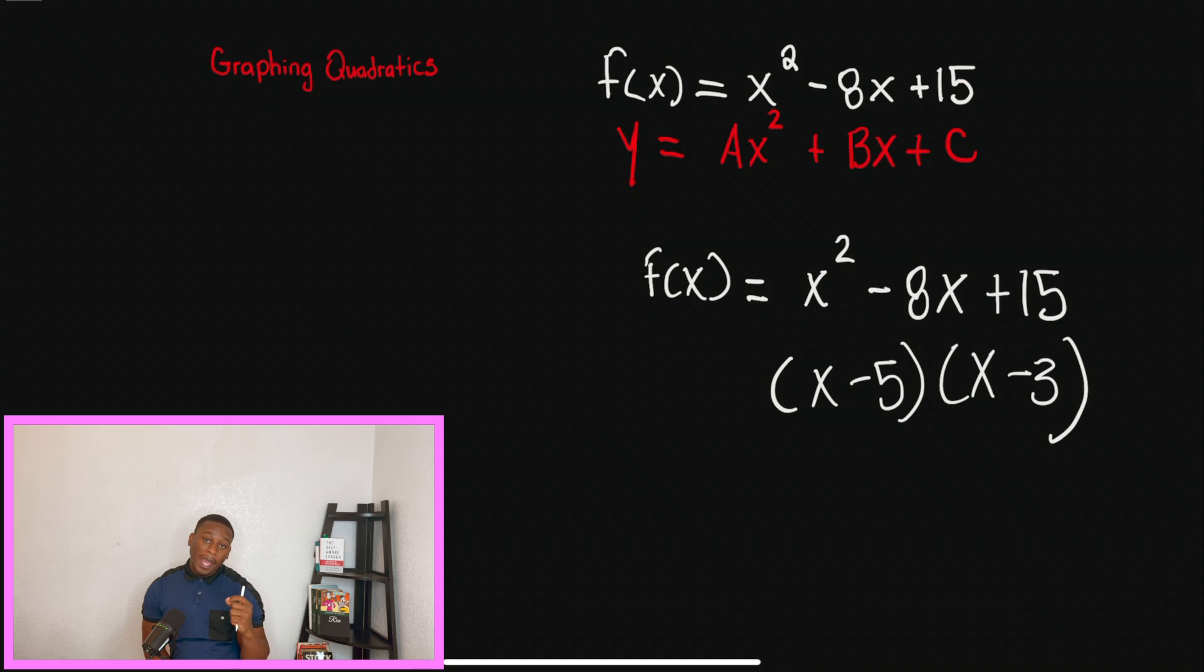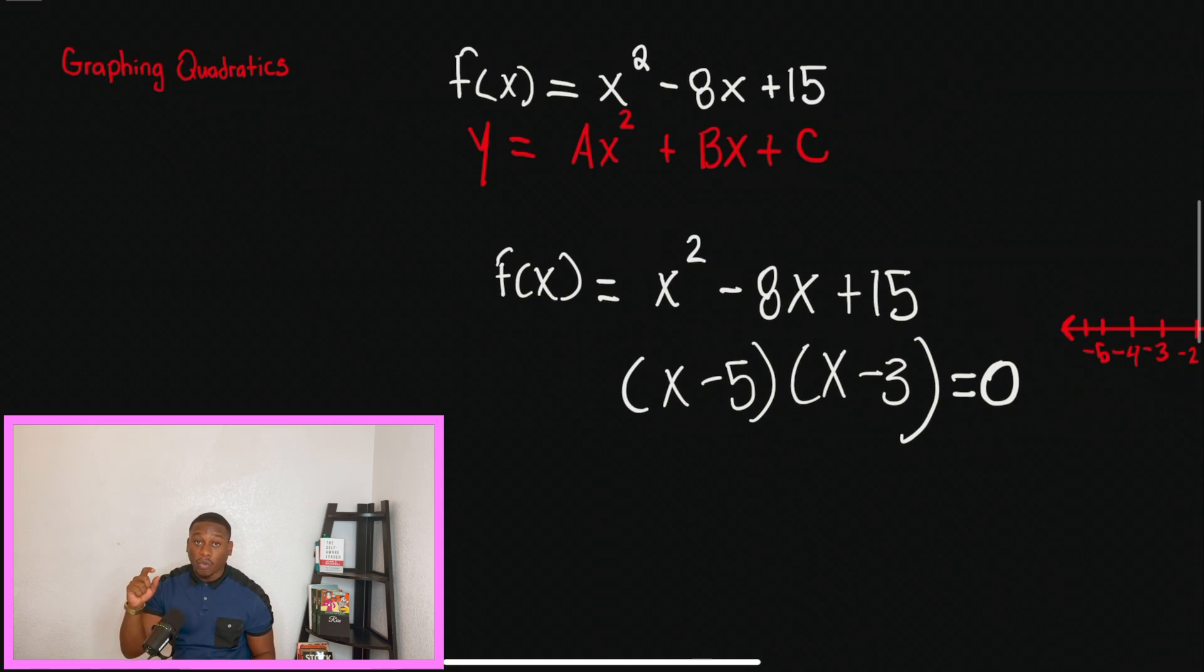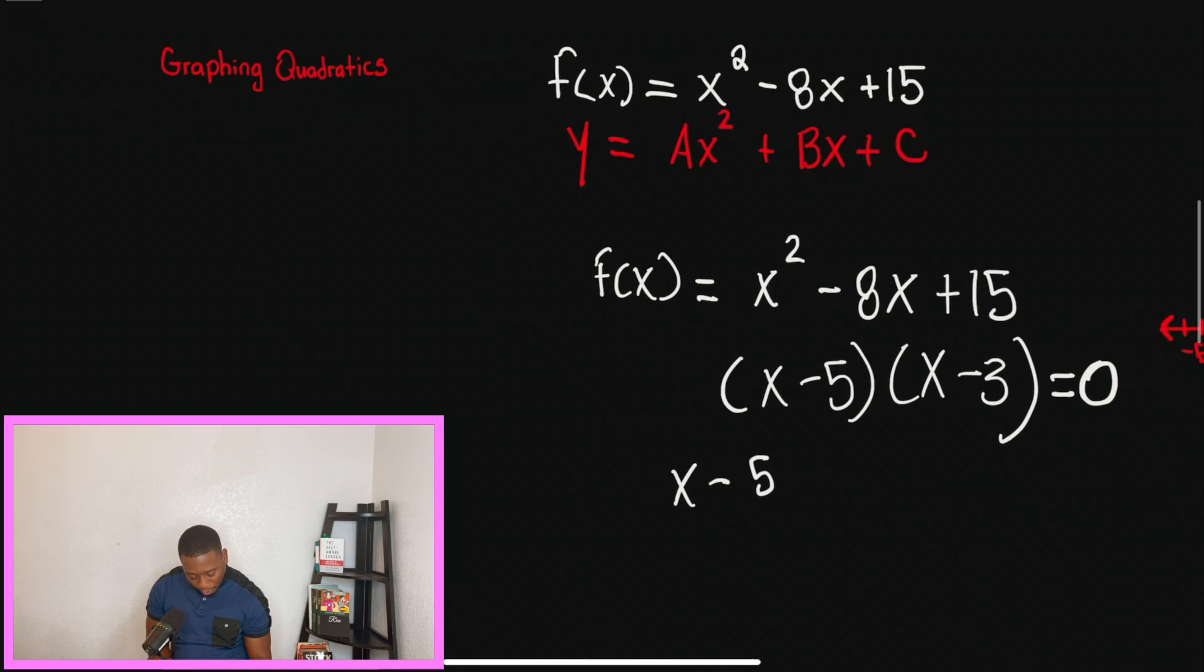A very big tip is when we're graphing, we have to set our factors equal to 0 so that we can know where to plot the points, because we could get the sign wrong. So now we have x minus 5 equals 0, so x equals 5 after we add it on both sides.